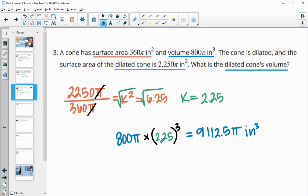This will give us 9,112.5 pi inches cubed. I didn't multiply in the pi, I just multiplied the 800 times 2.5 cubed and left pi. You could certainly multiply out pi if you wanted the full decimal version as well.